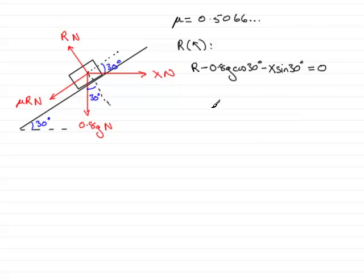So we can rearrange this equation to make r the subject. If we do that by adding these two terms to both sides, we get r equals 0.8g cos 30 plus x sin 30. So we've got that value. Let's label that one - we'll need to come back to that equation later on.